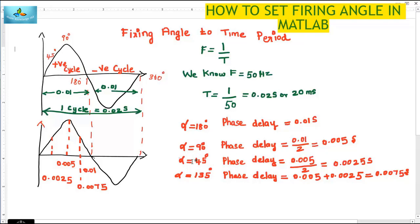If I want the phase delay for alpha equal to 45 degrees, we can see that 45 is midway between 0 and 90 degrees. The 90 degree time value is 0.005. Since 45 is midway between 0 and 90, I am dividing 0.005 by 2. The value is 0.0025 seconds. This is the phase delay for firing angle 45 degrees.